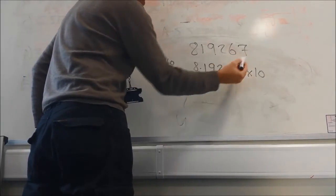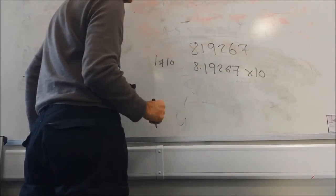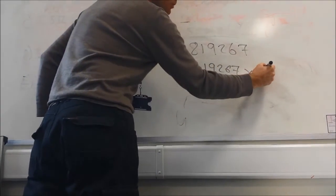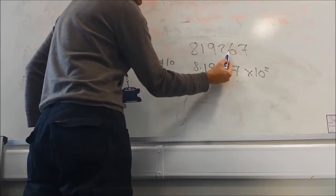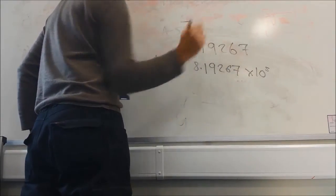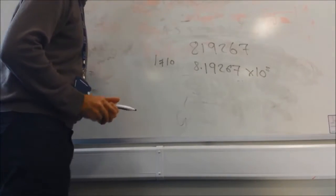Because every whole number has an invisible decimal point at the end. So 1, 2, 3, 4, 5. I had to move the decimal point five times to get to there. It was originally there. That's standard form, that's fair enough.